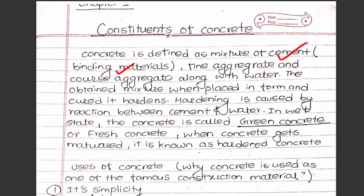Cement is the binding material. Fine aggregate is sand. Coarse aggregate is gravel. With water, the obtained mixture when placed in a form and cured it hardens. Hardening is caused by the reaction between cement and water.